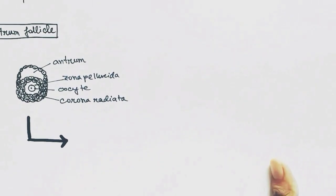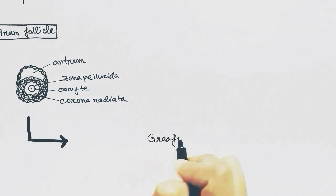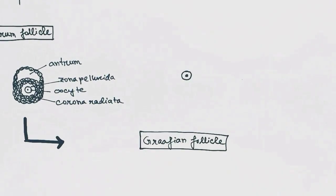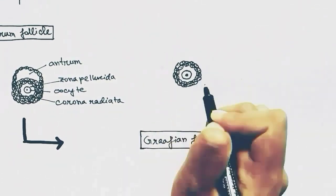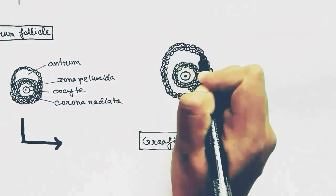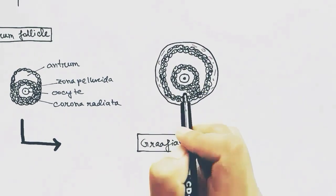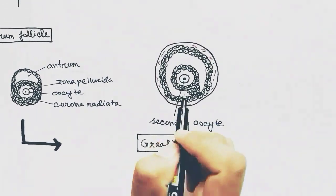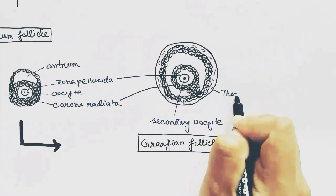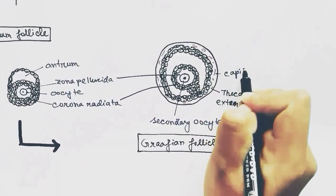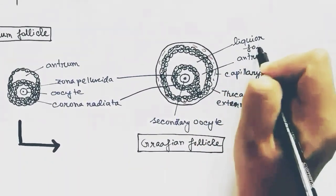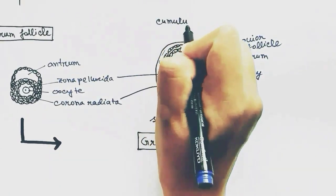The next developed follicle is called the Graafian follicle, which is the most developed follicle. In this follicle, the oocyte remains at the center, follicular cells surround the oocyte, and the antrum increases with more liquid in it. It has blood capillaries surrounding the follicle. The most external layer where the capillaries are present is called the theca externa. The liquid-filled cavity is called the liquor folliculi, and the cells associated with the oocyte are called the cumulus oophorus.